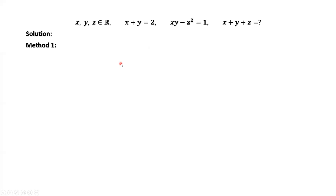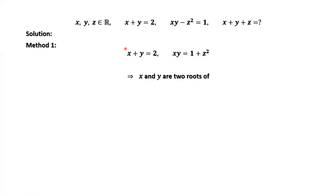Method 1. x plus y equals 2, and x times y equals 1 minus z squared. This is from the second given condition. From these two results, we have x and y are two roots of t squared minus 2t plus 1 plus z squared equals 0.